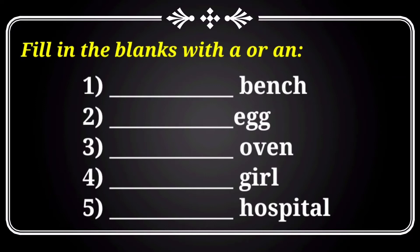You have to see the word — the first letter of the word: 'b'. It comes under a consonant. You have to remember the vowels: a, e, i, o, u. You should not just see the letter; you should see the vowel sound or consonant sound. So 'bench' begins with 'b', which comes under a consonant. So the answer is 'a bench'.